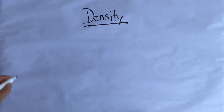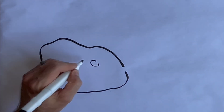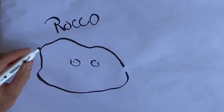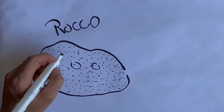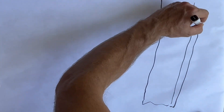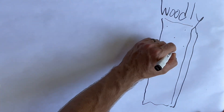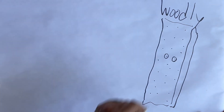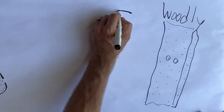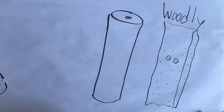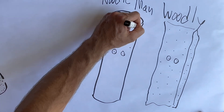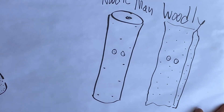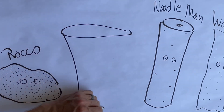Let's take a look at a picture to help us better understand this. The title of our drawing is of course density. First I'm going to draw Racco. Take a look at the particles — these are the little dots that I'm drawing. Racco has particles that are very close together and he has a lot of them. Now let's go to Woodley. Woodley also has particles — take a look at how his particles appear compared to Racco's, they're a little more spread apart. Next we'll do Noodle Man, and what do you think his particles will be arranged like? Very far apart.